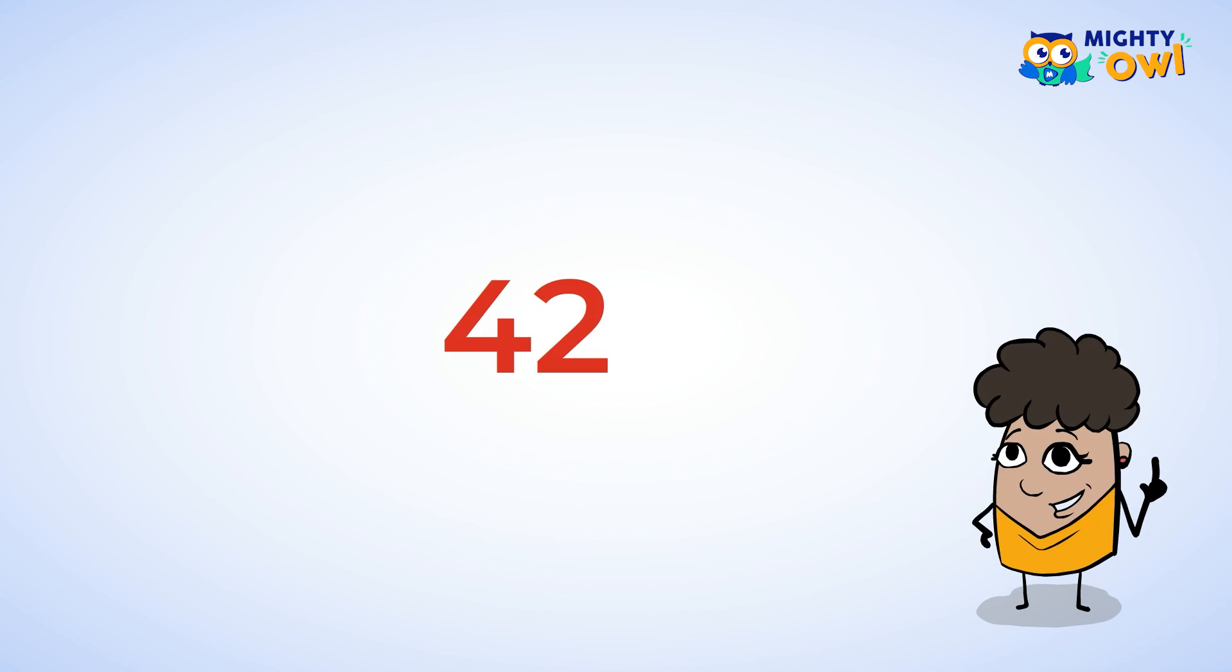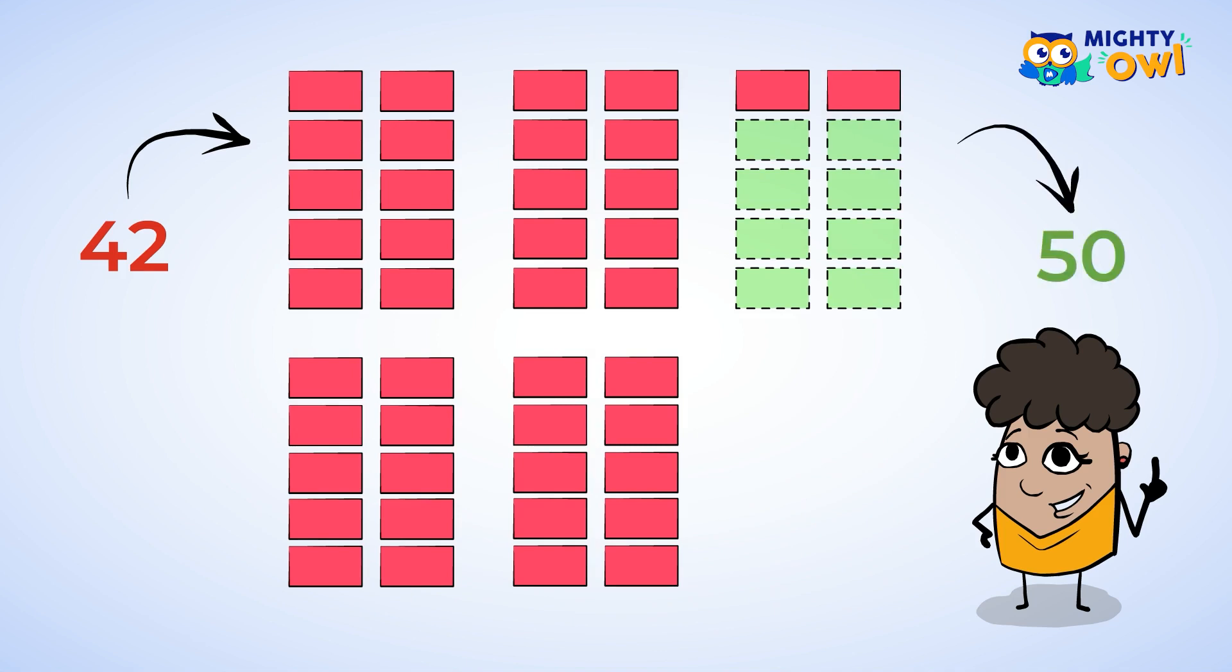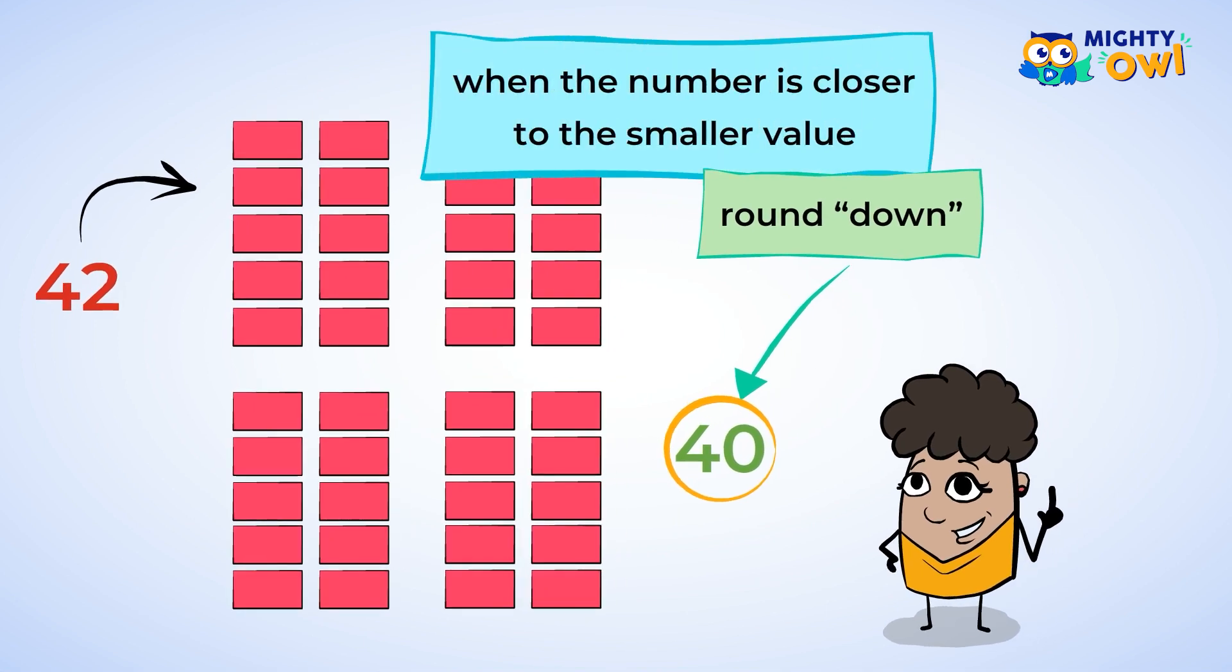Let's look at the number 42, for example. Now try to imagine what this looks like. That's right. There are four tens and two ones. In order to make it five tens or 50, you would need another eight ones. And that's a lot. But if you took the two ones away, only the four tens would remain. This doesn't change the number as much. So 42 can be rounded down to 40. You would round down when the number is closer to the smaller value.